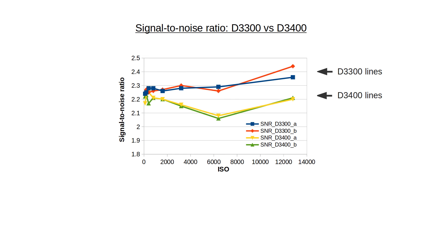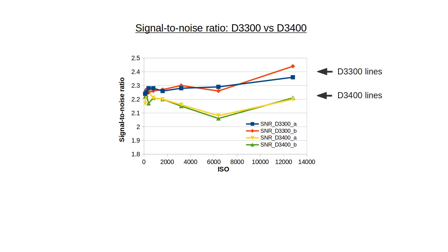My scripts also allow me to measure the signal-to-noise ratio. While my implementation is simple, it has the advantage that you can get results based on single photos without complicated experiments. The D3300 appears to have a better signal-to-noise ratio, especially at the higher ISO values, aligning with the claim that the D3300 handles high ISO values better than the D3400.